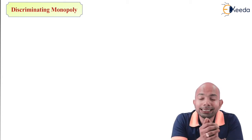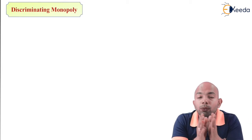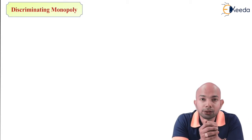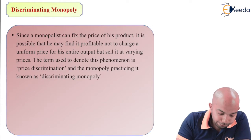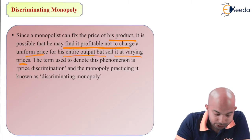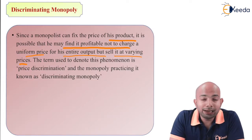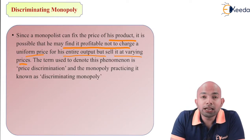What exactly does discriminating monopoly policy mean? Since a monopolist can fix the price of his product, it is possible that he may find it profitable not to charge a uniform price for his entire output, but sell it at varying prices. If I am a monopolist and I have different areas, I would be selling the same product at a higher price in an area which can afford that.